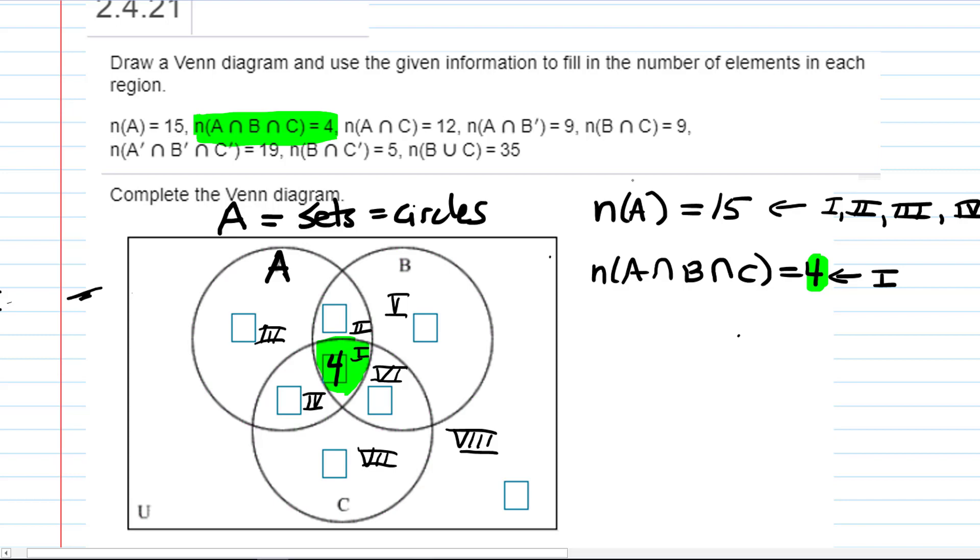Now we're going to cross that off. We've used that fact because I've put the four on the diagram and we're going to go to the next fact on my list. A intersect C equals 12. So when I say the number of elements in A intersect C equals 12, which region or regions am I describing? One and four.